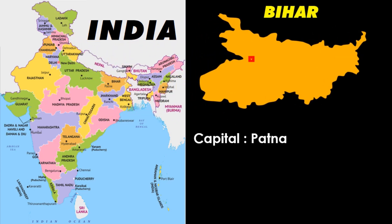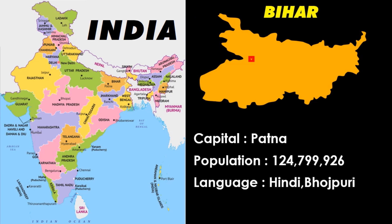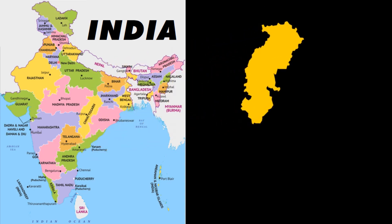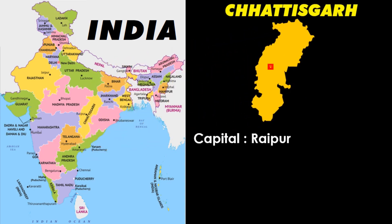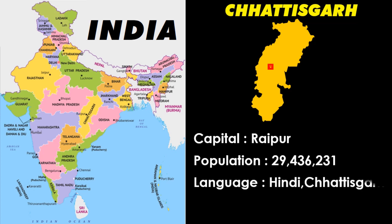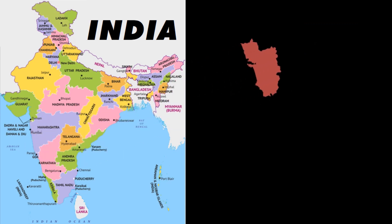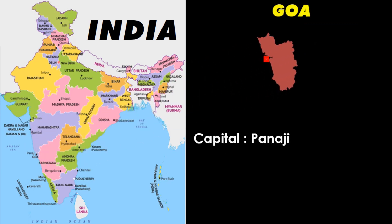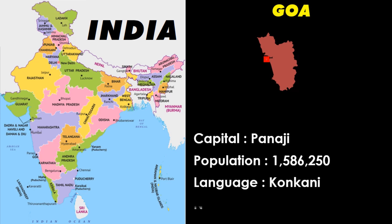Bihar: capital Patna, language Hindi and Bhojpuri. Chhattisgarh: capital Raipur, language Hindi and Chhattisgarhi. Goa: capital Panaji, language Konkani.